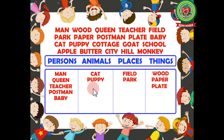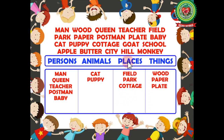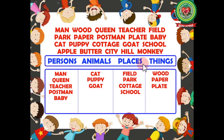Puppy is the name of an animal, so it is a noun. Next we have 'cottage' — C-O-T-T-A-G-E. Cottage is the name of a place, so it is a noun. Next we have 'goat' — G-O-A-T. Goat is the name of an animal, so it is a noun. Next we have 'school' — S-C-H-O-O-L. School is the name of a place, so it is a noun.